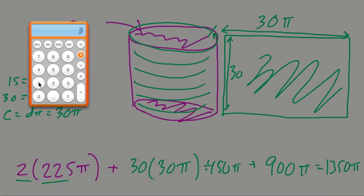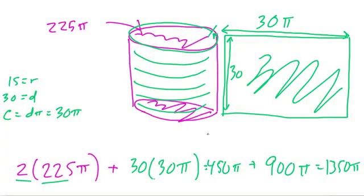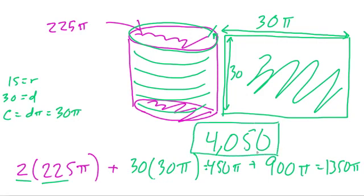And then multiply 3 by 1350 to get an estimation of the surface area. So here I get 4,050, and that's just an approximation if pi is about 3. And of course, we don't want to forget our units.